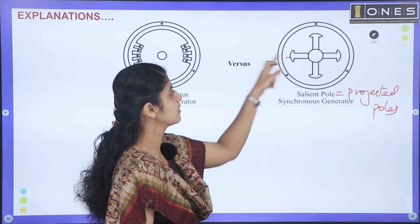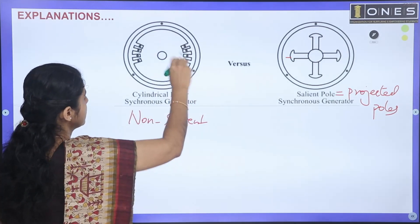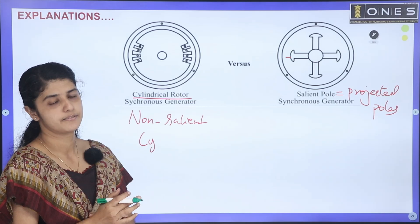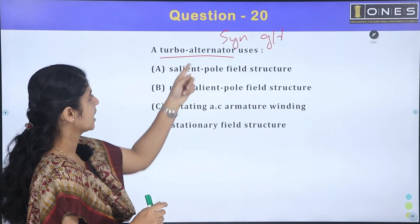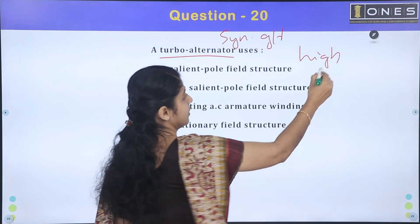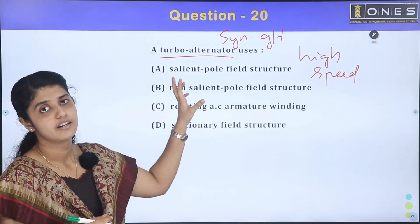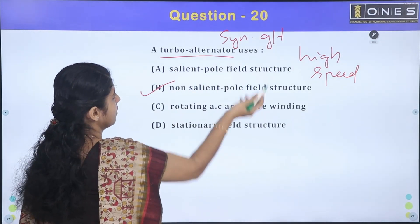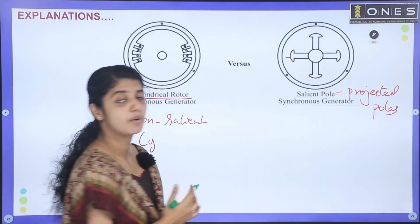There are projected poles — that is the salient pole structure. Non-salient is a cylindrical structure — it's a cylindrical rotor. A turbo alternator is in the high-speed category. It uses a non-salient pole field structure. This is the answer: turbo alternator uses non-salient pole structure.